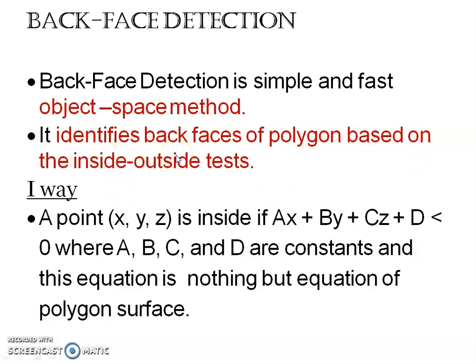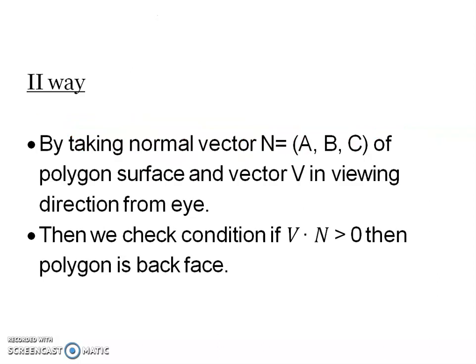First way: take a point with coordinate x, y, z inside a polygon surface. How can you say that it is inside? If the equation Ax + By + Cz + D is less than 0, you can say that the point is inside the polygon surface, that is, the back side of the object. Here, A, B, C, and D are constants, and this equation Ax + By + Cz + D is the equation of the polygon surface. In the first way, we are taking the point x, y, z and checking whether this equation is less than 0. If it is less than 0, that point is in the back face.